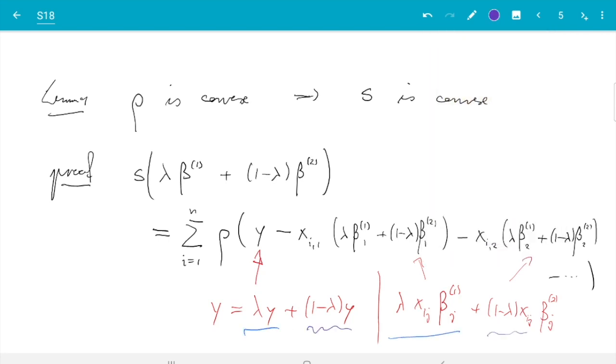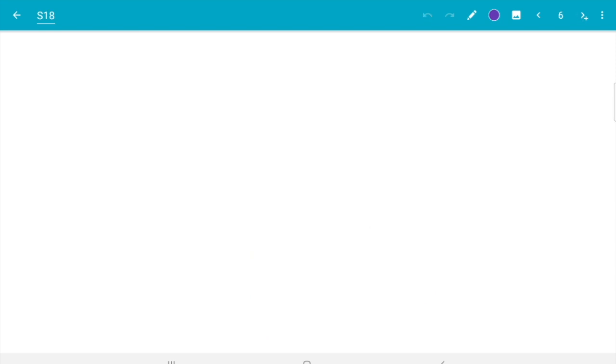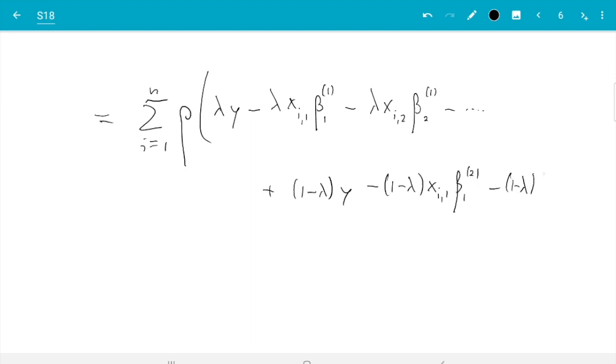And what I get is then sum i from 1 to n, rho and now I do first the terms with lambda. So I get lambda Y minus lambda X i 1 beta 1 1 minus lambda X i 2 beta 1 2. And then I get 1 minus lambda Y minus 1 minus lambda X i 1 beta 1 2 minus 1 minus lambda X i 2 beta 2 2 and so on.